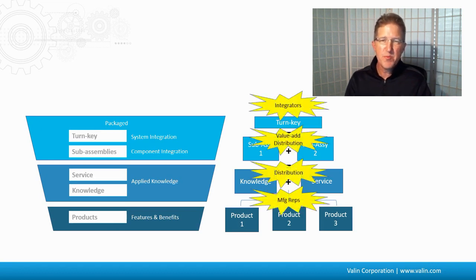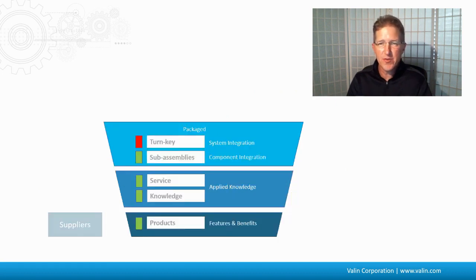The different people and companies involved in the sales and distribution channel start with the manufacturer's reps at the bottom. They may work for their own company or the manufacturing companies, but they represent the products and like to talk about the features and benefits. Then there's the distributors who have some knowledge of systems and different products and services, the value-add distributors that bring those together, and then the integrators that bring it all together at the turnkey level.